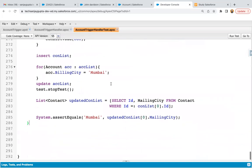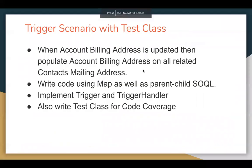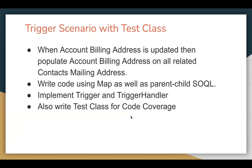I hope you understood how we can implement this scenario through a map as well as through parent-to-child SOQL. As a best practice, always try to use maps so that you can reduce loop complexity. I also hope you understood how to implement the test class — you can copy previous test methods and modify them as per your requirement. Thank you.